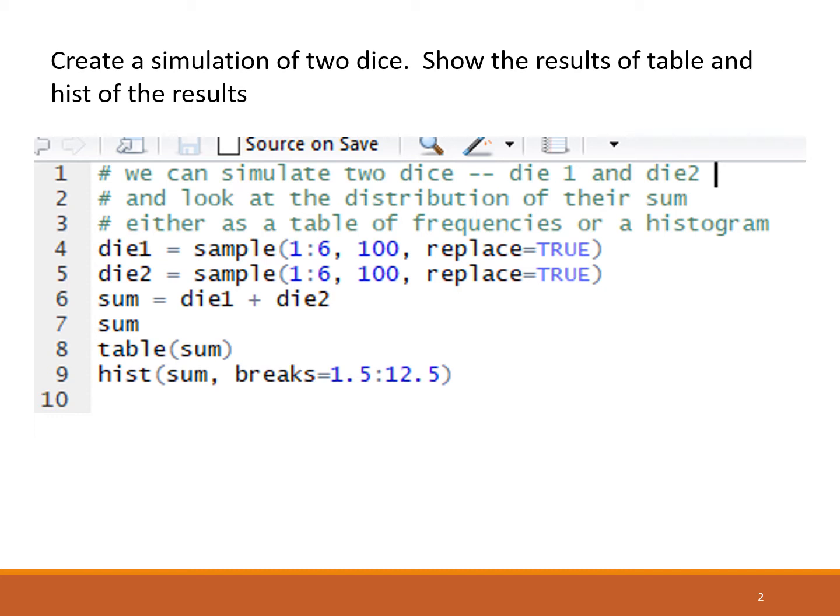The table sum is going to tell us how many times we rolled 2, 3, 4, all the way up to 12. In line nine, we're going to make a histogram of the sum data. The possible values go from 2 to 12. To make the histogram look nice, we're using the second argument of the histogram, the breaks. We're going from a little bit below the smallest, so instead of 2, 1.5. And the highest was 12, we go a little bit beyond 12 to 12.5.